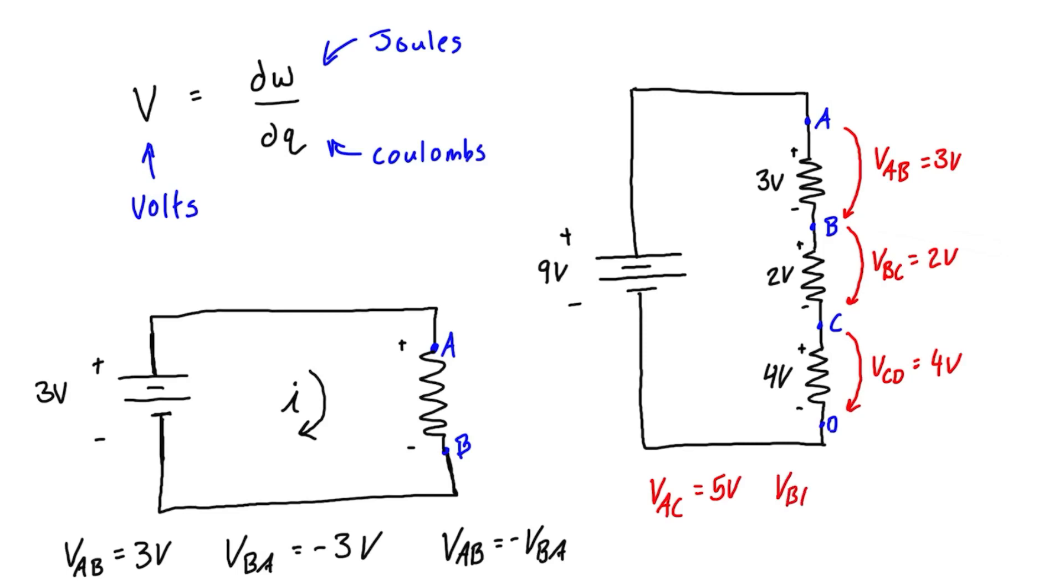We could check from point B to D as well—that would be two volts plus four volts for a total of six volts. We could even check from point A all the way to D: three plus two plus four gives us Vad = 9V. It's not a coincidence that this equals the battery voltage, because all the voltage drops should equal the amount the battery is contributing.